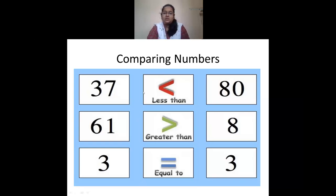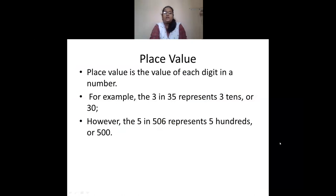We saw comparing numbers. 37 is less than 80, so we put the less-than sign. 61 is greater than 8, so we put the greater-than sign. And 3 is equal to 3, so we use the equal-to sign.